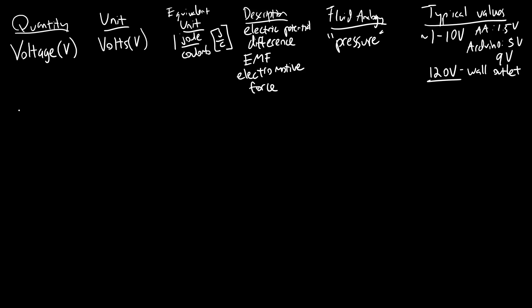Next up, we have current. You will usually see this abbreviated with an I. I prefer to use a capital I. Some textbooks or lecturers will use lowercase. That is measured in units of amperes, abbreviated A. You will almost always hear this just abbreviated as amps. Most people do not bother saying amperes out loud. An ampere is equivalent to one coulomb per second or one C per S.